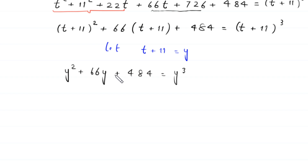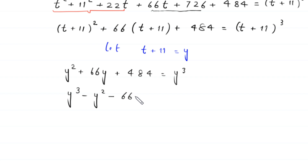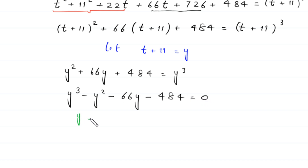Moving all terms to the right-hand side, this becomes y cubed minus y squared minus 66y minus 484 is equal to 0.